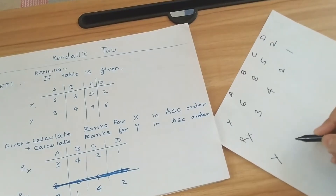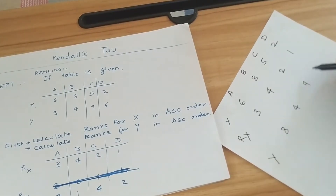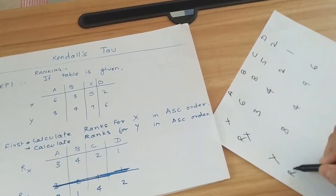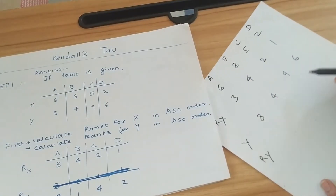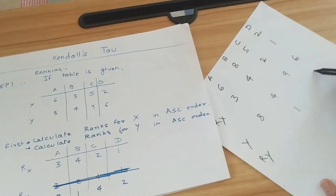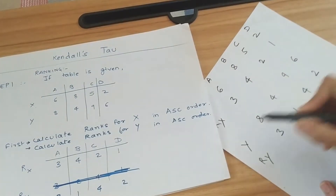Similarly, we have the ranks for Y. The elements of Y are 8, 4, 9, 6, and the ranks of Y will be: 4 is rank 1, 6 is rank 2, 8 is rank 3, and 9 is rank 4.